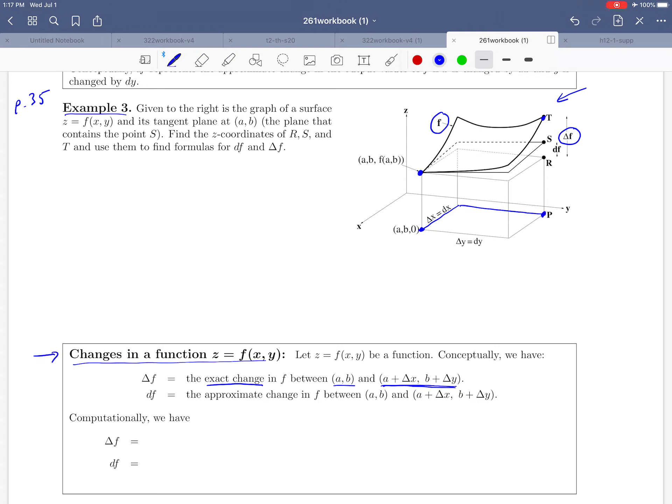How would we measure that? Well all we really have to do is to substitute in both of the input values here and subtract them. So we're going to get f of (a plus delta x, b plus delta y) minus f of (a,b). That's going to give us exactly this vertical distance up here.